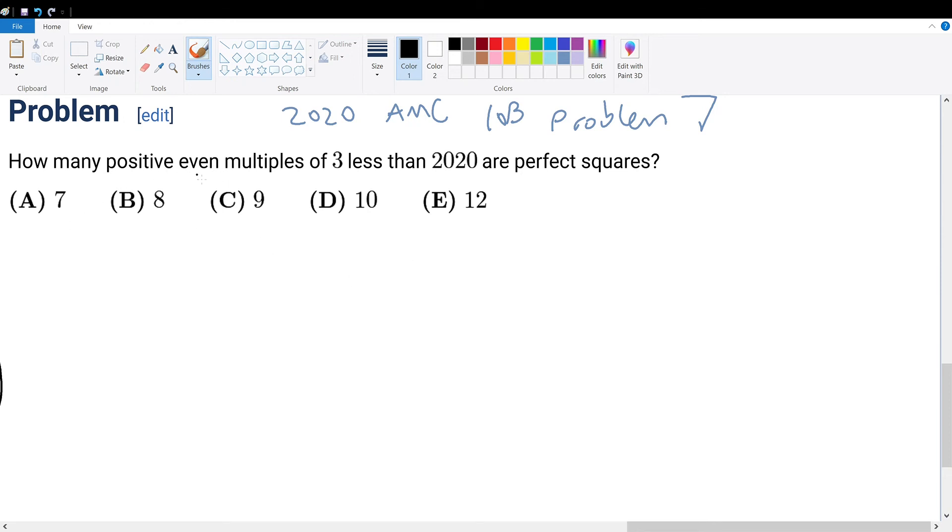Alright, so this AMC question asks us to find how many positive even multiples of 3 less than 2020 are perfect squares.